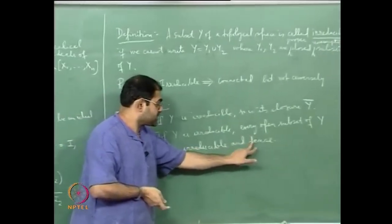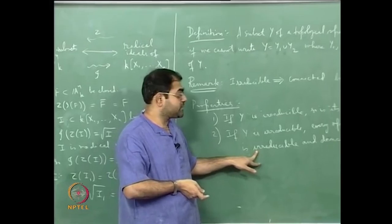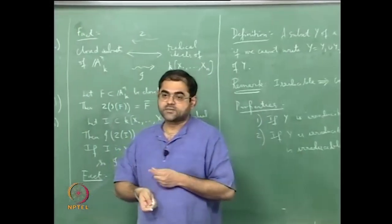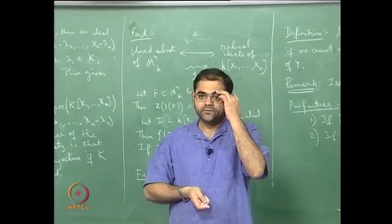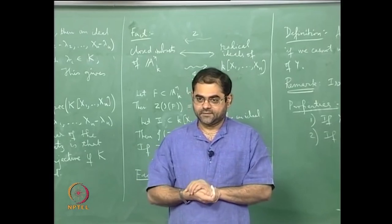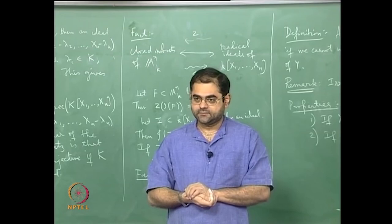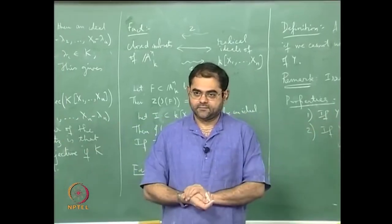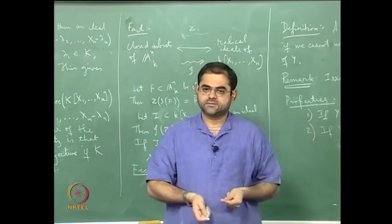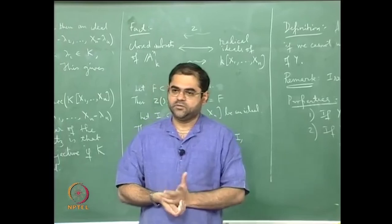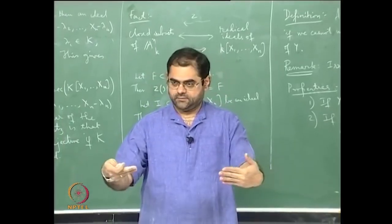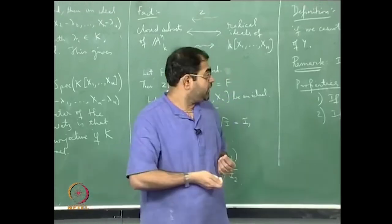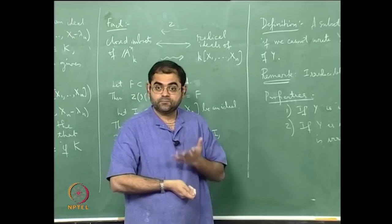Any open subset of an irreducible space is irreducible — irreducibility passes to open subsets. This is not true for connectedness: an open subset of a connected set need not be connected. For example, the real line is connected, but the union of two disjoint open intervals is an open subset that is not connected.